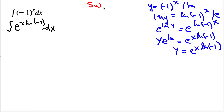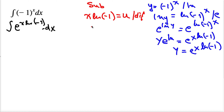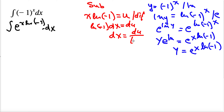Let us substitute here. So x·ln(-1) is equal to u. Let us differentiate both sides. When we differentiate, we get ln(-1)·dx is equal to du. Because now we want to substitute dx with u, but we have ln(-1), so dividing both sides by ln(-1) gives dx equal to du divided by ln(-1).